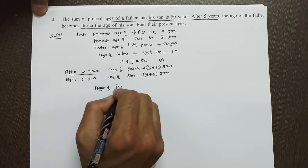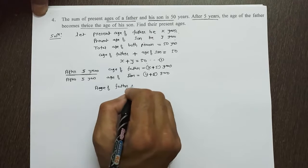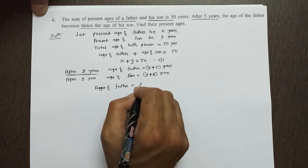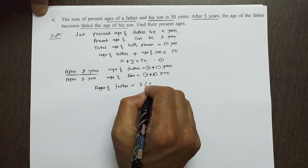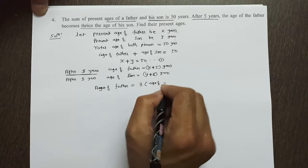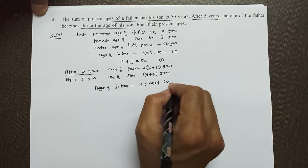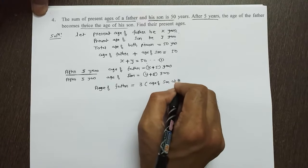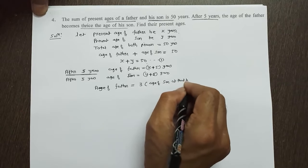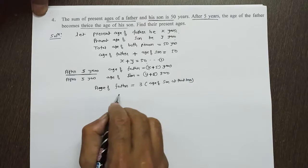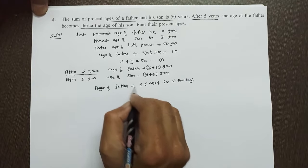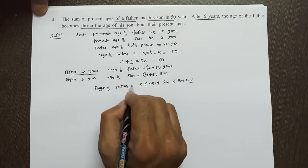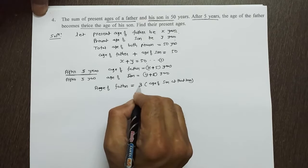Age of father is equal to thrice, more than 3, age of son at that time. At that time, father's age was three times the son's age.